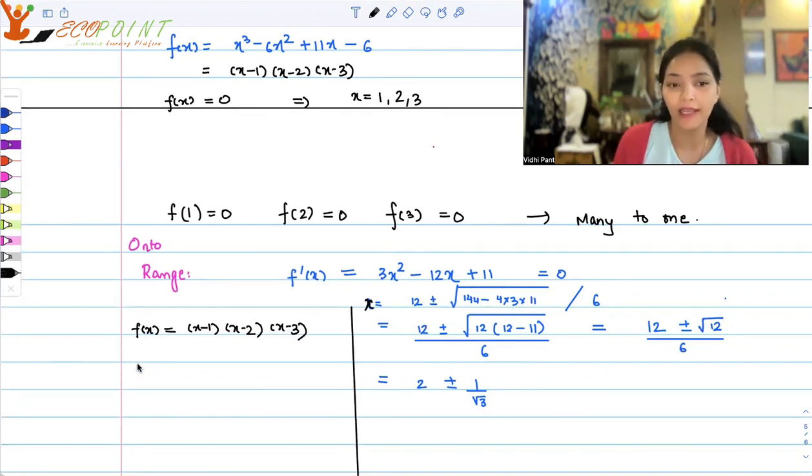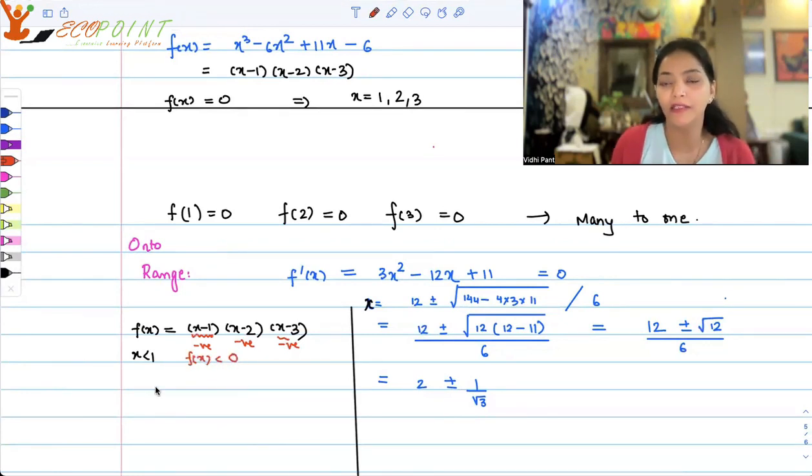So perhaps we can analyze this function in the following manner. Now, if you take x which is lesser than 1, what's going to happen to this product? This expression will be negative. This expression will be negative. This expression will be negative. So that means your f(x) will be lesser than 0.